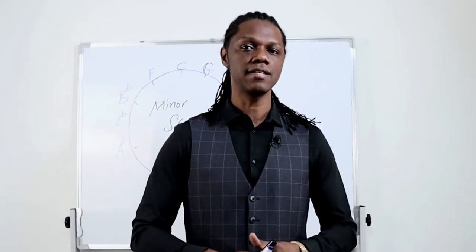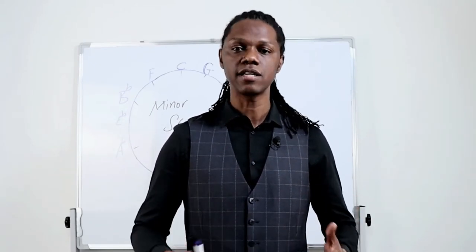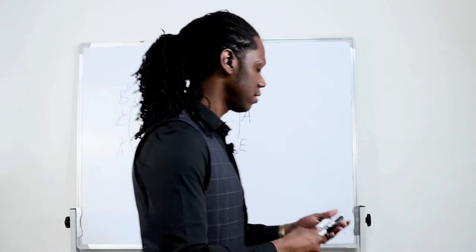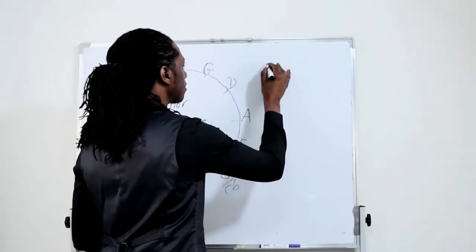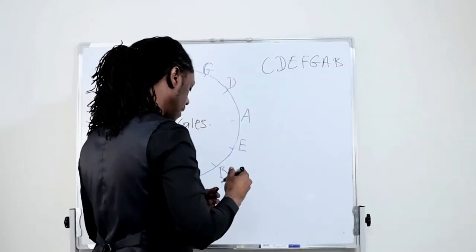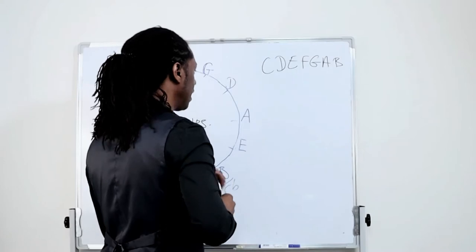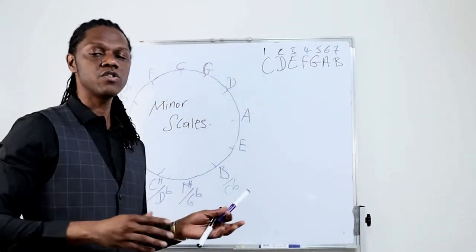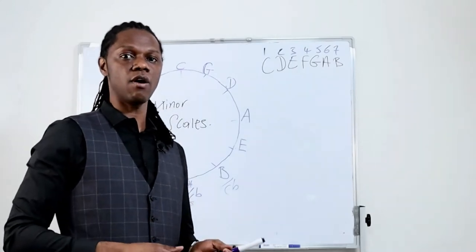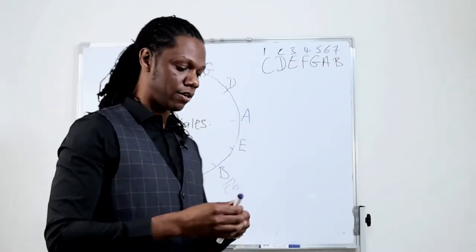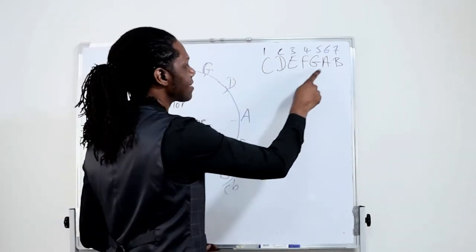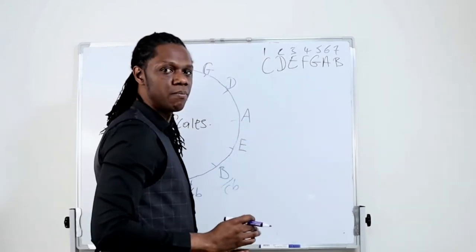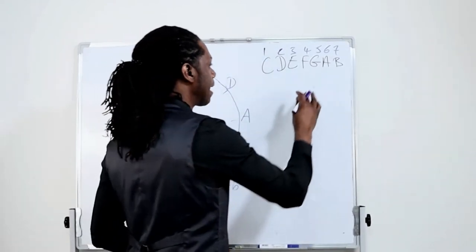The first way is the easiest way, and that is once you know your major scales, it's easy to make the natural minor. So let's take C as an example and label the degrees of the scale. To make the relative minor of C major — the relative natural minor — all you do is go to the sixth degree of the scale, which is A, and you make that the root.